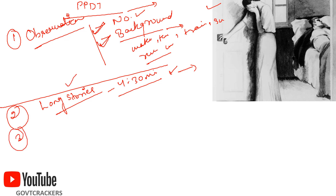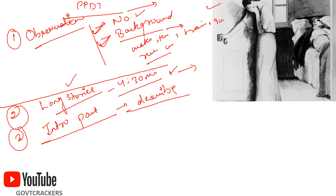The third important and very common mistake is adding too much in the introduction part. Introduction should be brief. Many people describe the picture rather than writing a story — they don't tell what is actually happening. This is a very common mistake. If you read stories from various sources, most people are basically describing the picture and not creating a story.